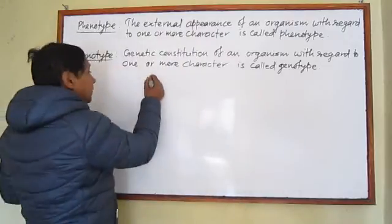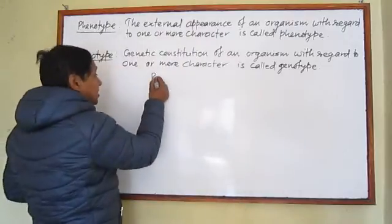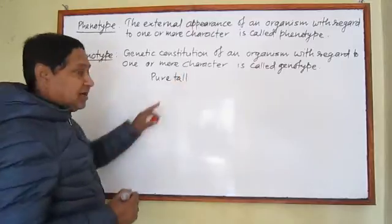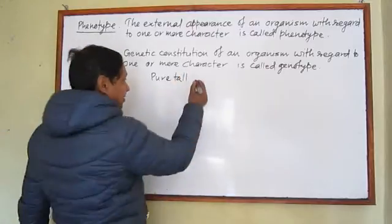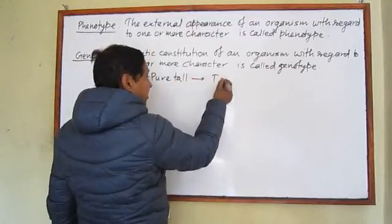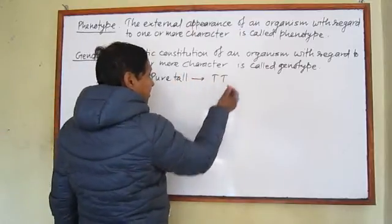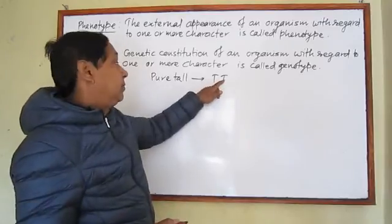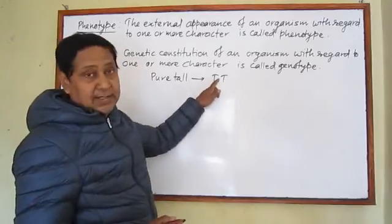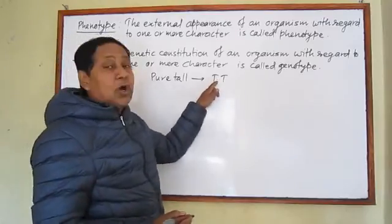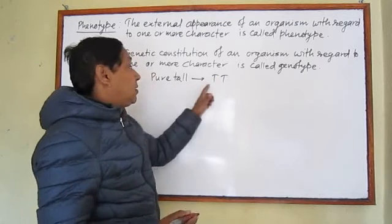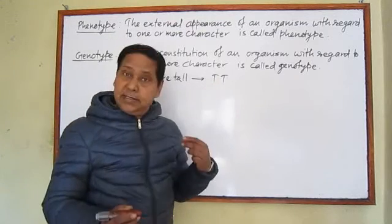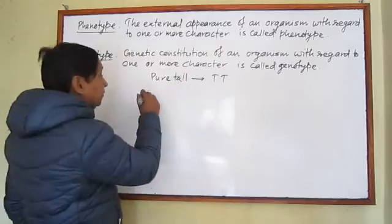For example, if someone says 'pure tall pea plant,' then its gene must be represented as capital T capital T. Both genes carry the character of tallness, that's why it is called pure tall. This is also called homozygous tall.